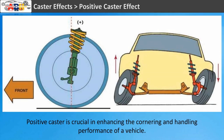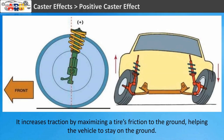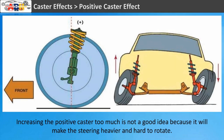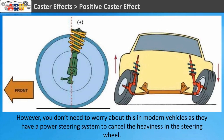Positive caster is crucial in enhancing the cornering and handling performance of a vehicle. It increases traction by maximizing a tire's friction to the ground, helping the vehicle stay on the ground. Increasing positive caster too much is not a good idea because it will make the steering heavier and hard to rotate. However, modern vehicles have a power steering system to cancel that heaviness in the steering wheel.